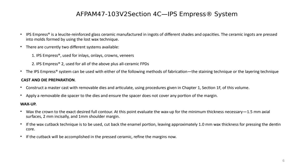For the wax-up, we can do the full contour crown, but we also need to think about coping thickness requirements. For porcelain fused to metal, the coping should be 0.5 mm thick, which allows enough room to apply opaque porcelain, dentin porcelain, and incisal porcelain for a nice layered result matching the patient's shade. The same concept applies to all ceramics, except the coping thickness for all ceramics must be a little larger — about 0.6 to 0.7 mm thick.